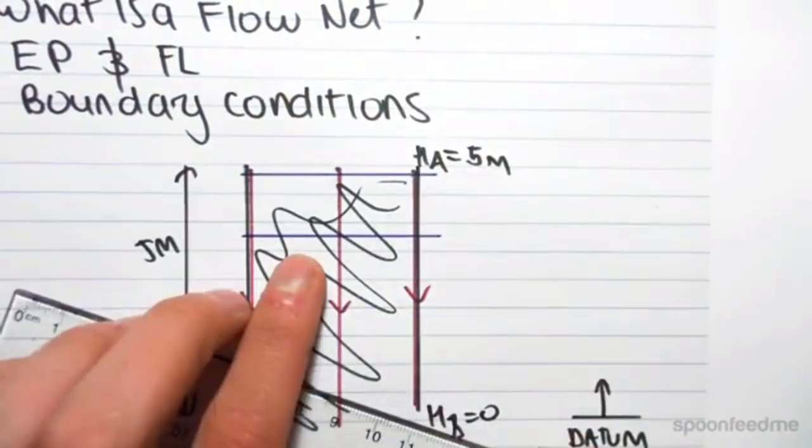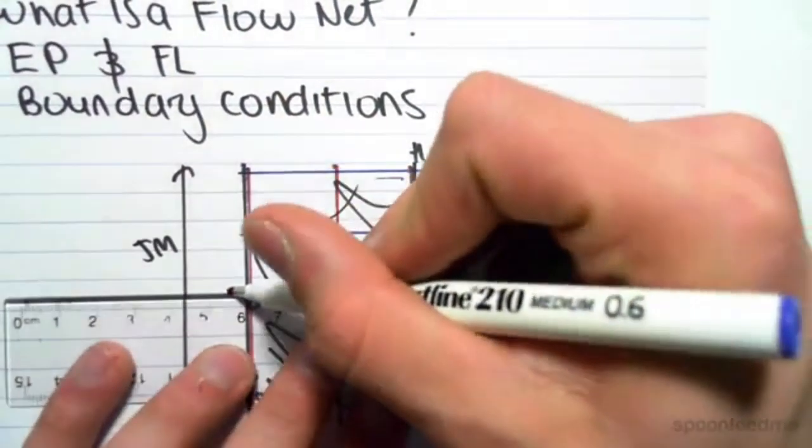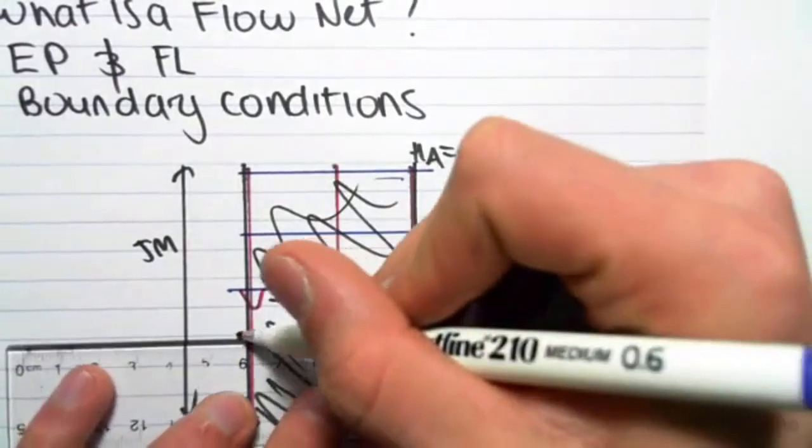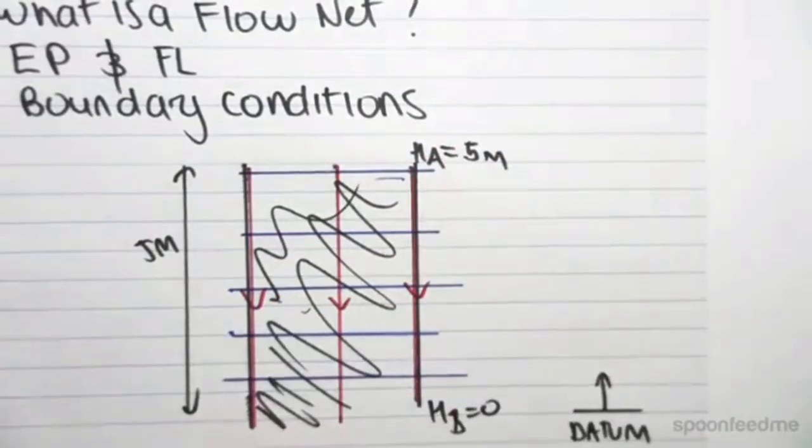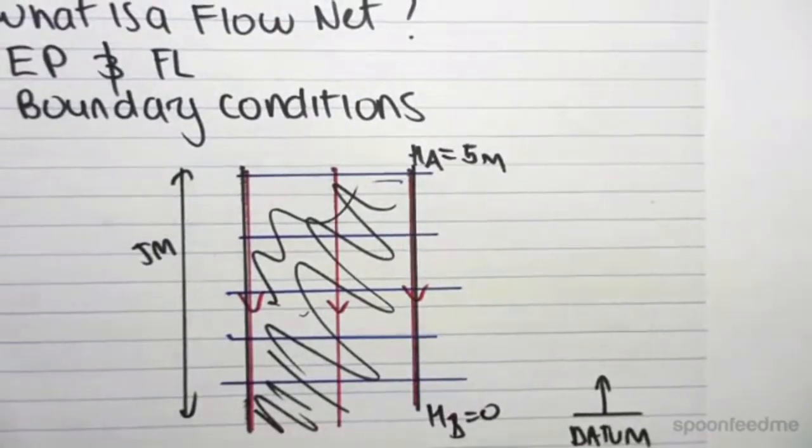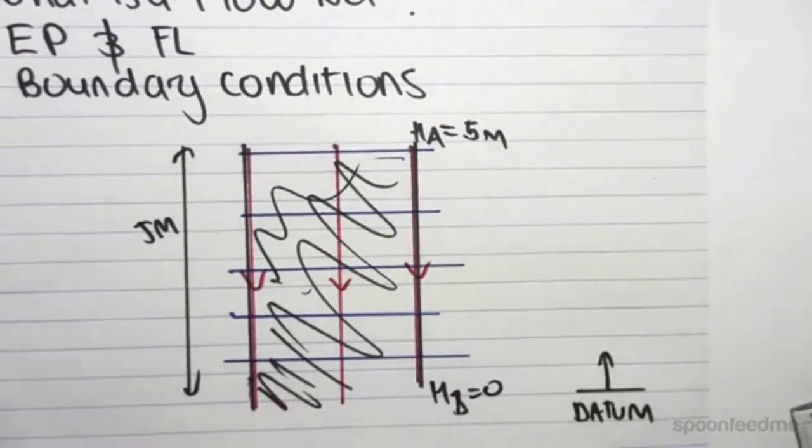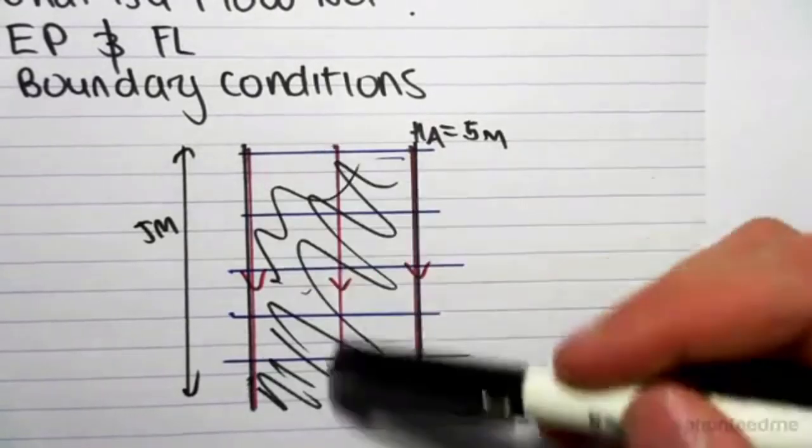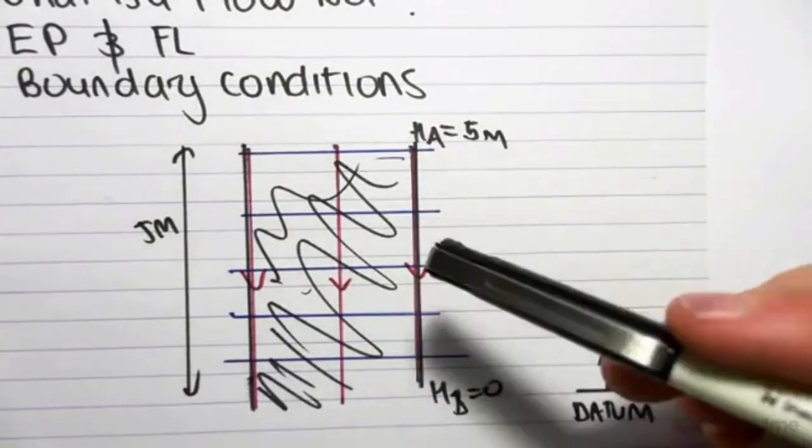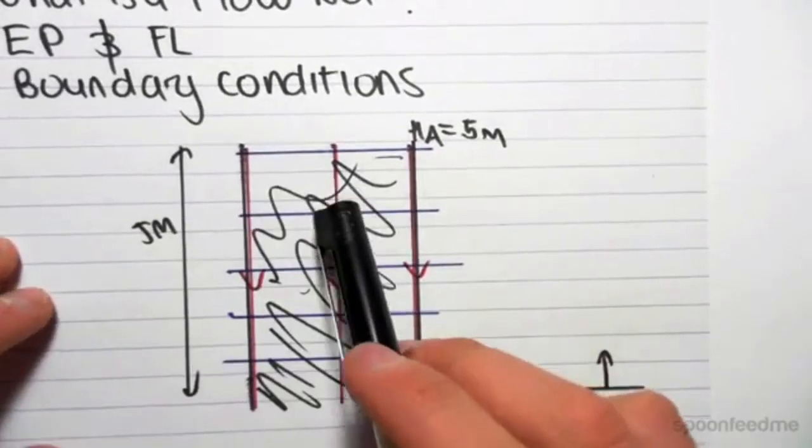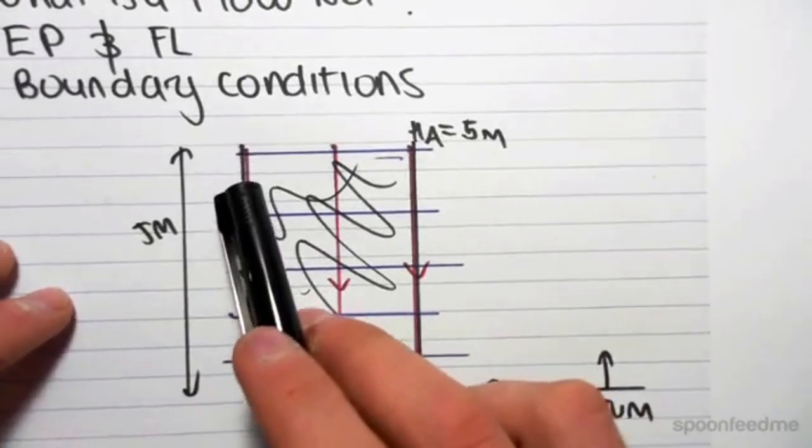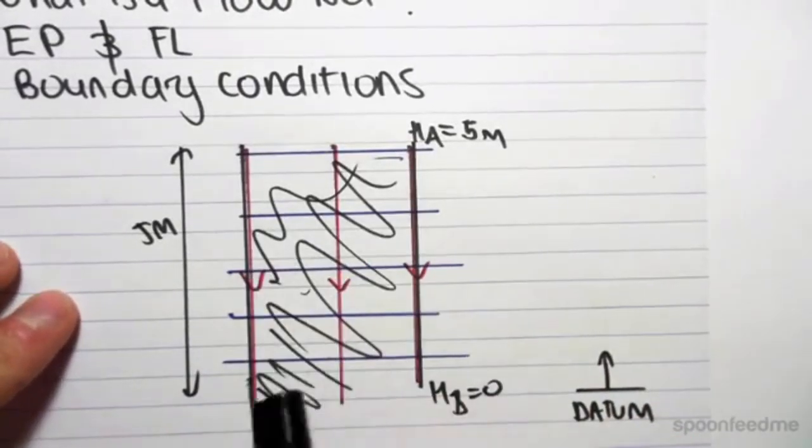There's a constant head of 5 meters along that line. Say over here, we probably have a constant head of about 4 meters. At this line, maybe 3 meters. At this line, maybe 2 meters. And at this line, maybe 1 meter. And then down to a zero head level at the bottom. So this is a basic flow net. A flow net has flow lines, which demonstrate the direction of the water flow. And they also have equipotential lines, which represent points or planes of constant head.